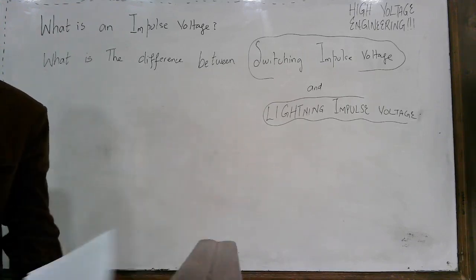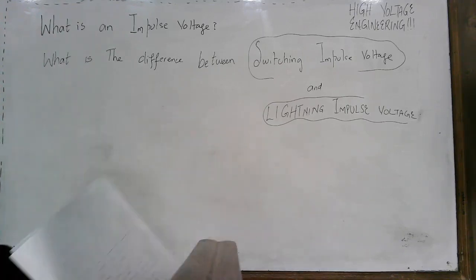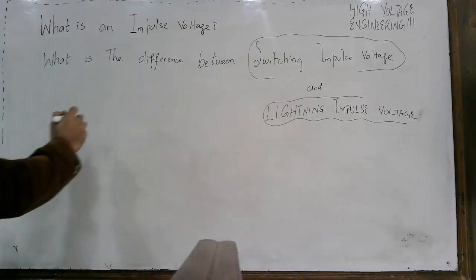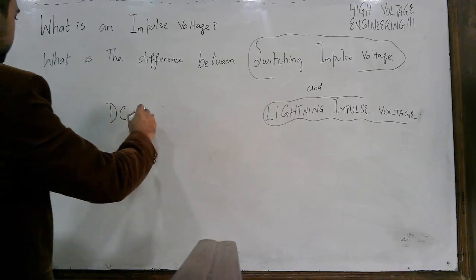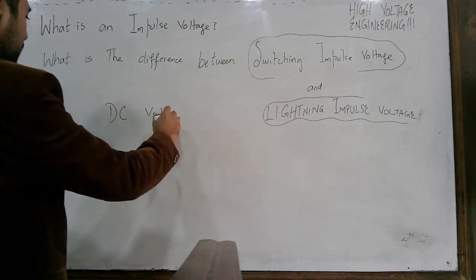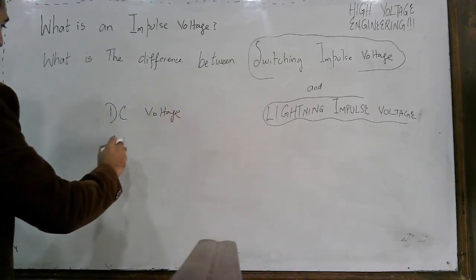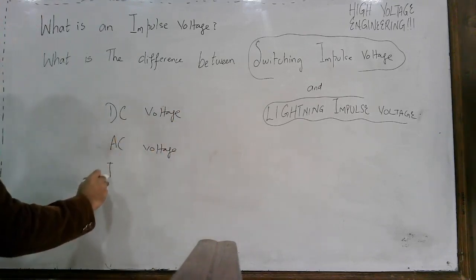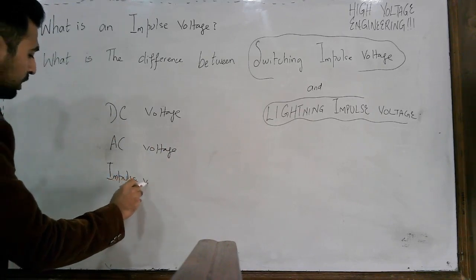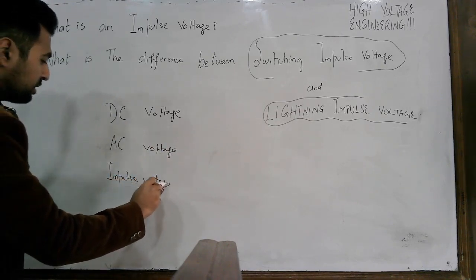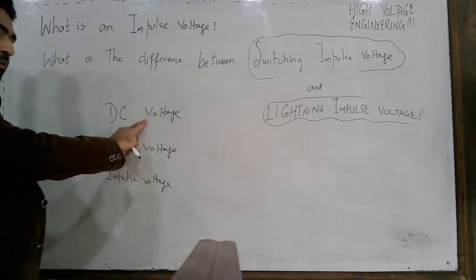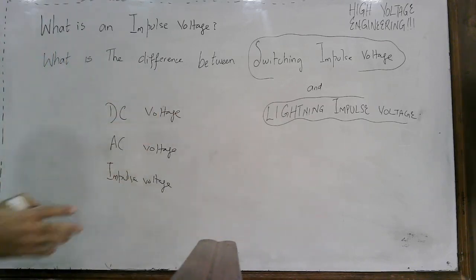In the world of AC power or in the world of power systems, we have actually three types of voltages: DC voltages, AC voltage, or the third type — impulse voltage. Impulse voltage is unidirectional. DC voltage is also unidirectional, but AC voltage is bidirectional.